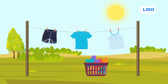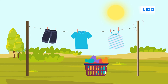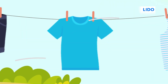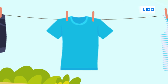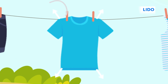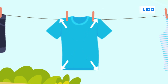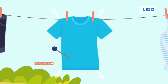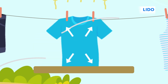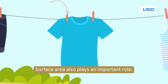Now, it's easy to understand why our clothes dry faster on a windy day. Think about why we always hang our clothes out for drying on a string instead of piling them up in a basket and keeping the basket out in the sun. By putting the clothes on a string, we increase the surface area of the damp cloth, which means there is a high probability of liquid particles escaping from the cloth in the form of vapor. So, surface area also plays an important role.